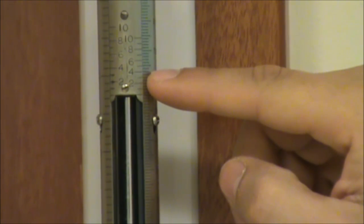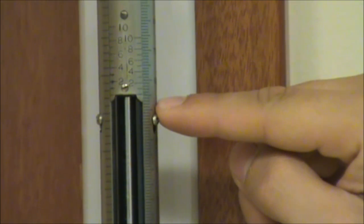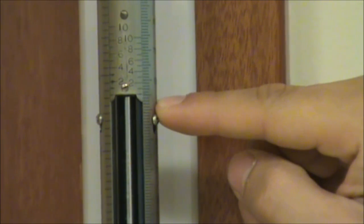Mercury forms a reverse meniscus. Rather than arcing downwards like water does, mercury arcs upwards. We want the very top of this meniscus to line up with the very bottom of the vernier. The markings on the side right here indicate the height of the mercury. This one indicates that we are around 755 millimeters of mercury.